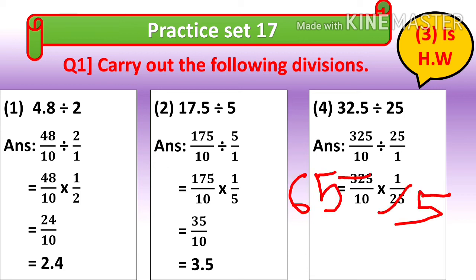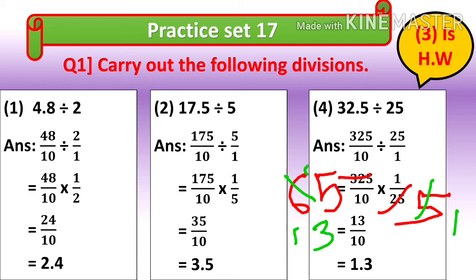We will cut with 25: 5×5=25, 5×6=30, remainder 2; 5×5=25. Again we can cut by 5: 5×1=5. Here we had 65; 5×1=5, remainder 1; 5×3=15. Here we get 13 upon 10. So the answer is 1.3.